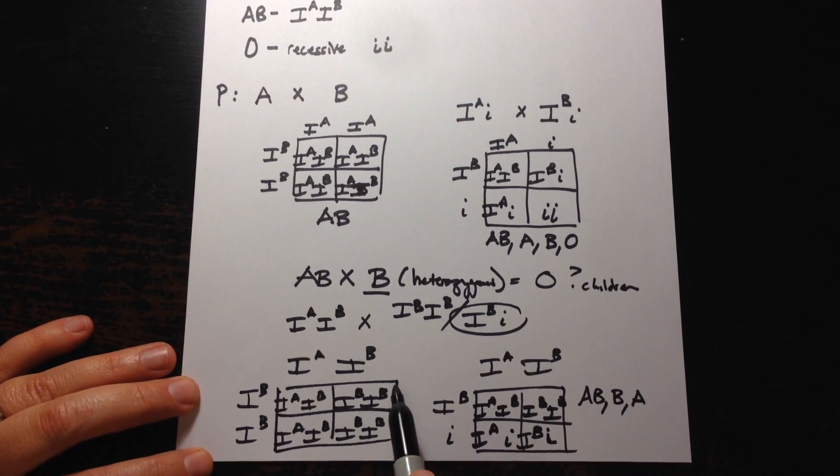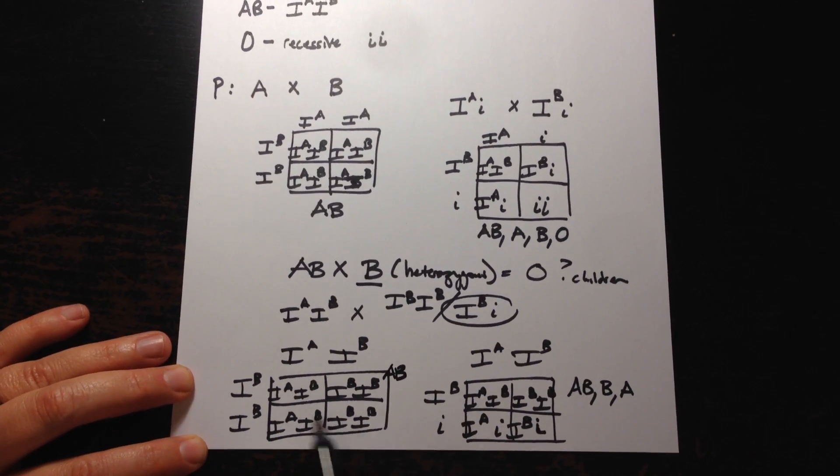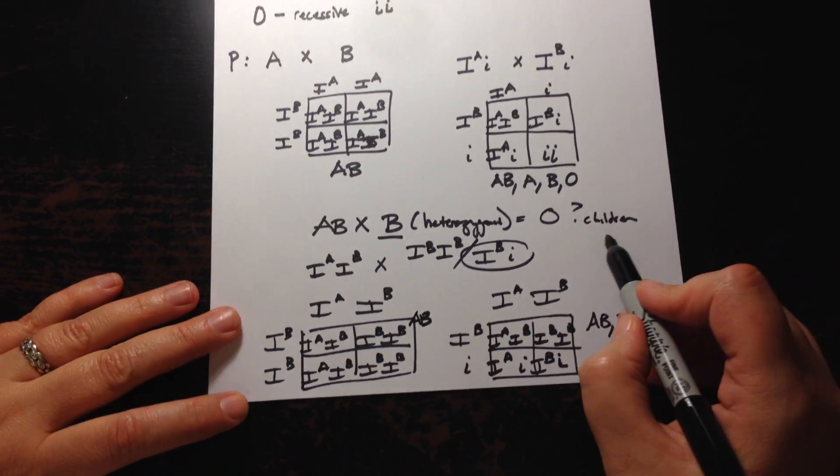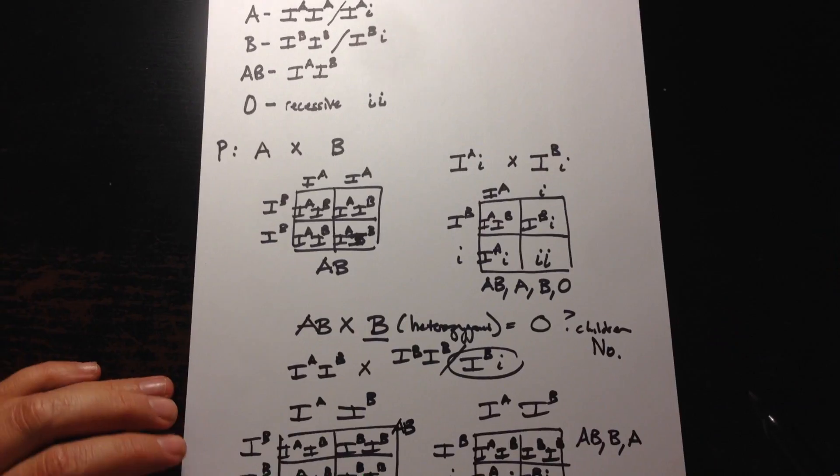So over here we could make AB only. Over here AB, B and A. No type O. So your answer would be no. That is not possible.